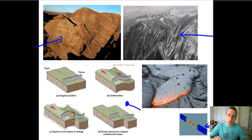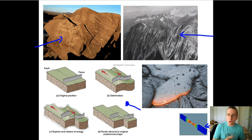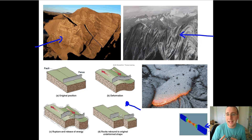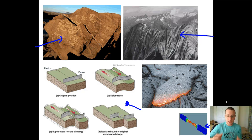Quick review: ductile strain we call folds; brittle strain we call faults. Rocks are going to be more or less likely to do that depending on how plastic-like they are. Rocks can also be elastic and viscous depending on the type of rock you're talking about. And depending on this, you're going to have different kinds of strain.